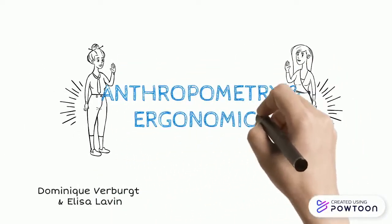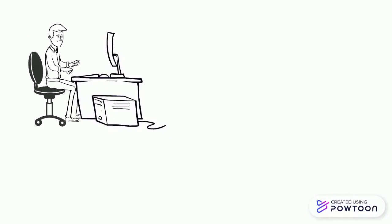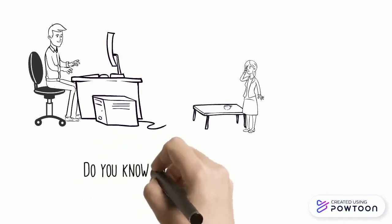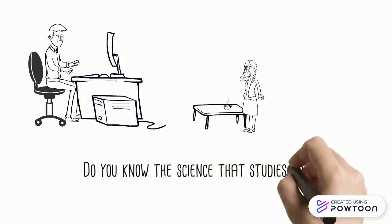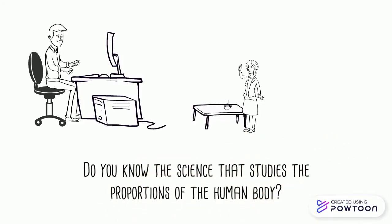Anthropometry and ergonomics. In today's video we are going to explain two very important sciences that we use every day but that you may not identify. We want you to guess: do you know the name of a science that studies the size and proportions of the human body? If your reply is anthropometry, you are one step closer to knowing the basic principles of design.